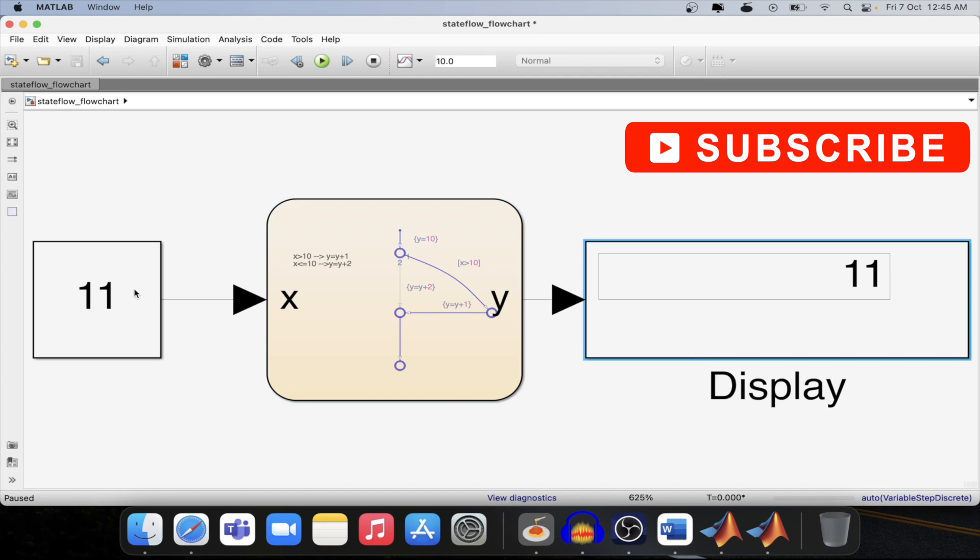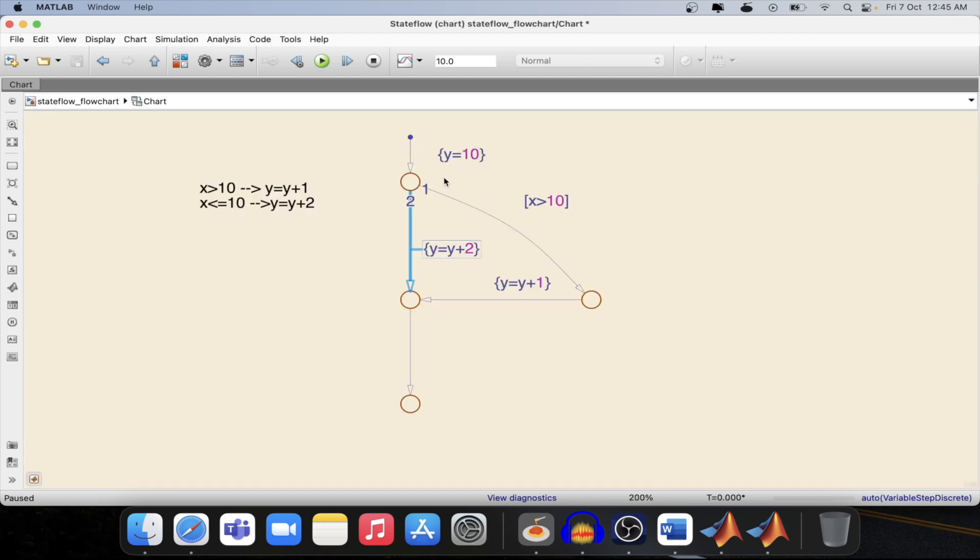So based on the condition that we defined over here, like whichever the path it should follow, based on which if we make the flowchart, then the flowchart will behave that way.